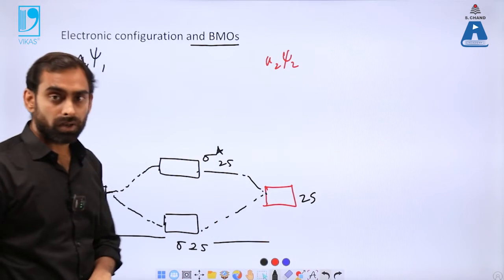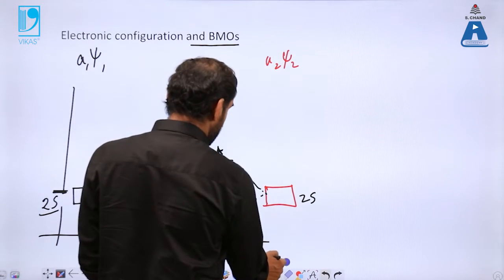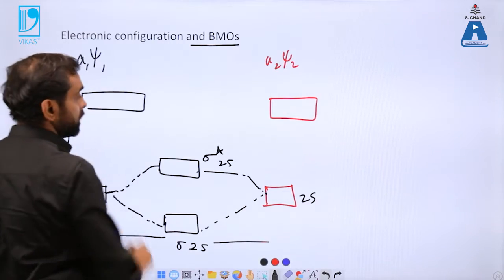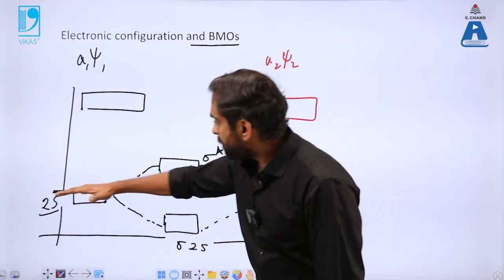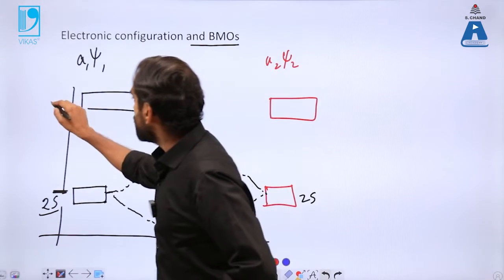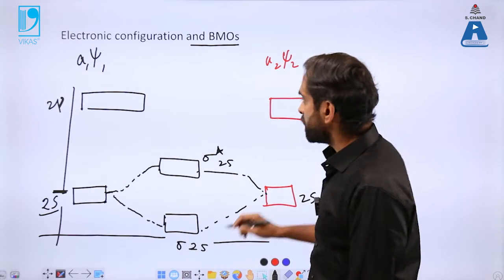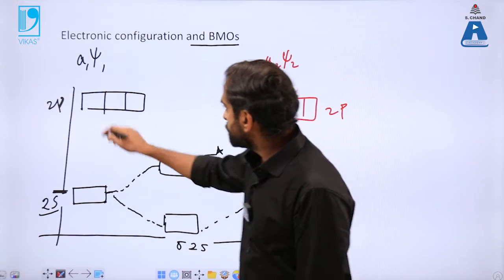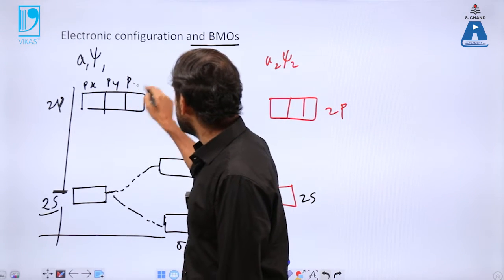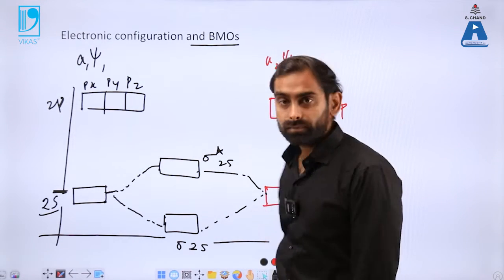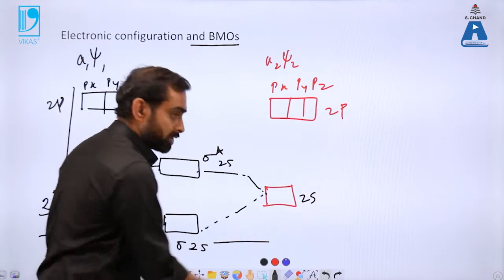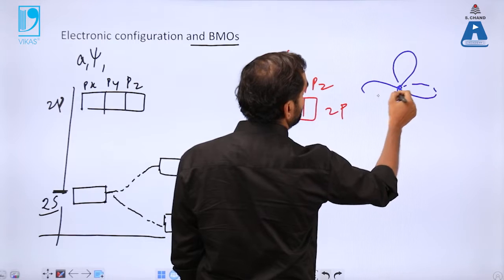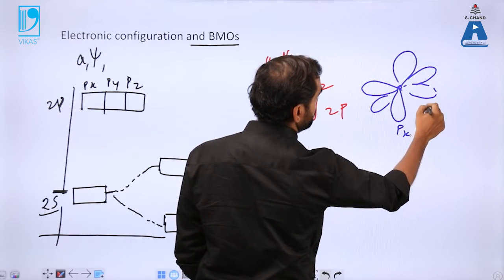On the other hand, compared to 2s, the 2p orbital has higher energy, so 2p atomic orbitals are plotted higher up. There are three degenerate orbitals in the p subshell — px, py, and pz — and similarly for the other atom. The 2p orbitals combine in two different ways: one p orbital is oriented along the bond axis, another perpendicular, and the third also perpendicular.